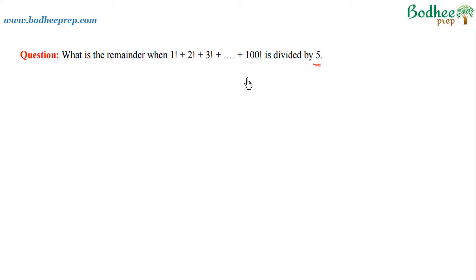Now the thing to remember for such questions is that there is factorial 5 in between them, and factorial 5 onwards all numbers will be divisible by 5. We can write that factorial 5 onwards, all numbers till factorial 100 will be a multiple of 5, and hence the corresponding remainder will always be 0.